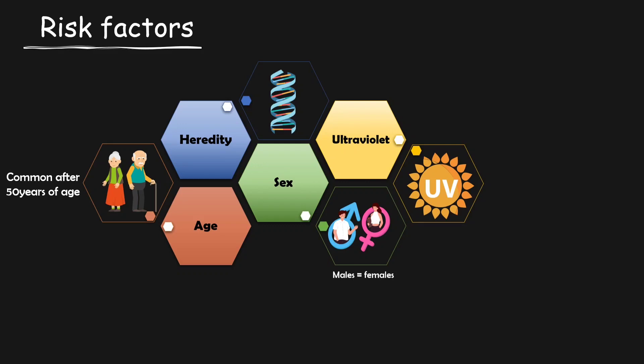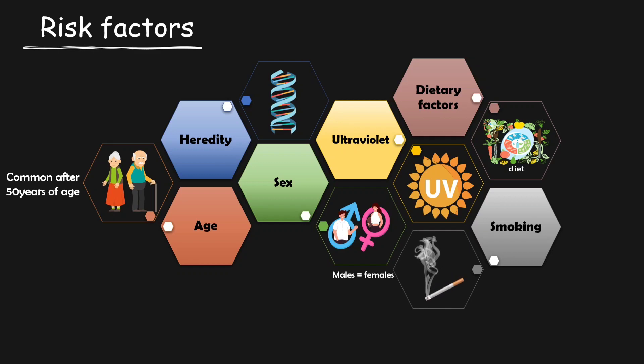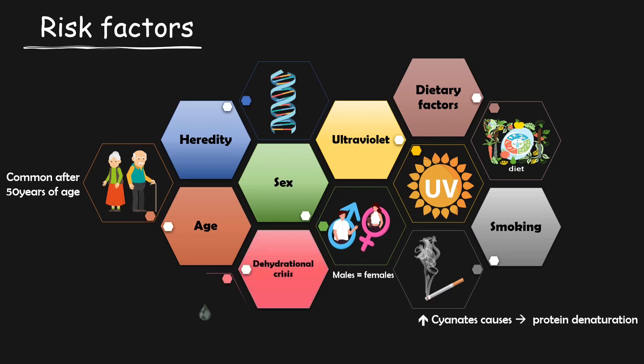Next, those people having malnutrition, especially if they are not taking vitamins or proper minerals, are at higher risk. This is why cataract is more common in lower socioeconomic status due to malnutrition. Smoking is another important factor — people who smoke have higher levels of cyanide, which causes protein denaturation, increasing the chances of cataract. The final risk factor is dehydration crisis, which also plays a role in cataract formation, especially nuclear cataract.